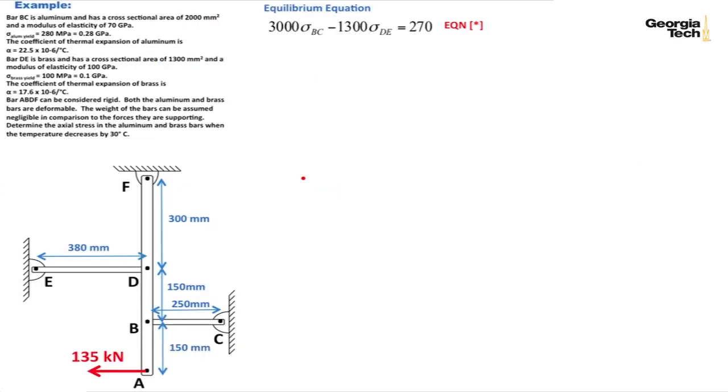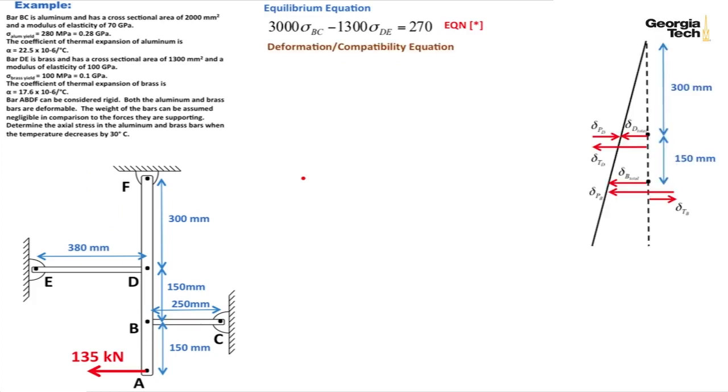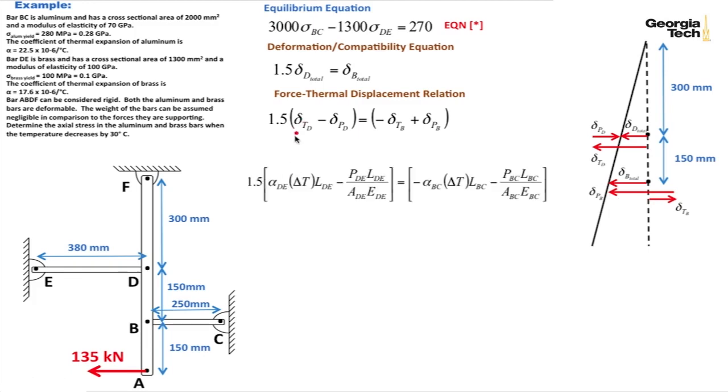There's my equilibrium equation, there's my deformation equation. Let's go ahead and now put in the parts of the deformation due to the temperature change and due to the normal force. The force thermal displacement relationship is 1.5 times for D total. That's the deformation due to the temperature change minus the deformation due to the normal force at D. On the other side, we have the deformation of B total equals minus the deformation due to temperature, plus the deformation due to the normal force.